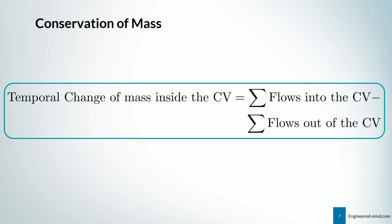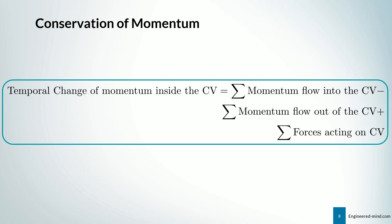So the conservation of mass, just to have a quick recap, is that the temporal change of mass inside of our control volume is the flows into the control volume minus the flows out of the control volume. For the conservation of momentum we have something similar. We have that the temporal change of momentum inside the control volume is equal to the momentum flow into the control volume minus the momentum flow out of the control volume plus forces acting on our control volume.